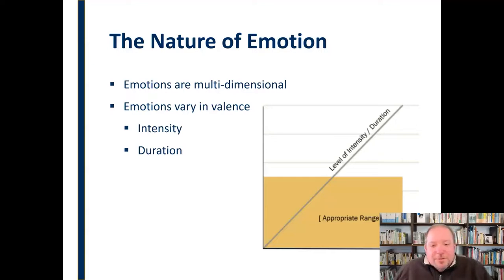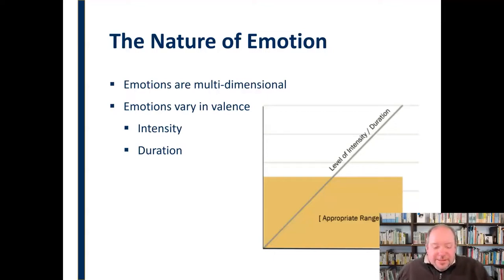Emotions are going to vary in valence, and every emotion can have either a positive or negative valence — it just depends on the situation and the context. So that's how we look at and measure emotion: through valence.